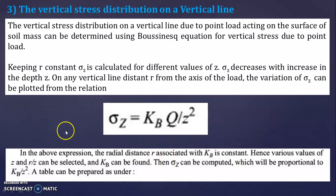By using the table you will be able to get the KB value. Here R associated with KB is constant. Hence, various values of Z and the ratio R divided by Z can be selected and KB can be found. You have to keep R value constant, change the Z value, and get the value of KB. Based on KB you can find sigma Z.